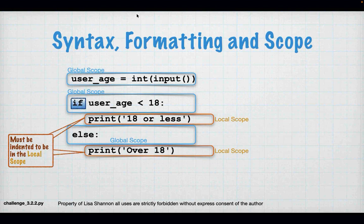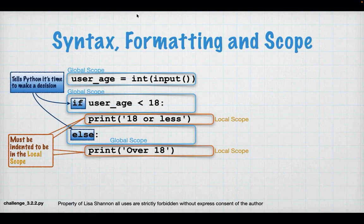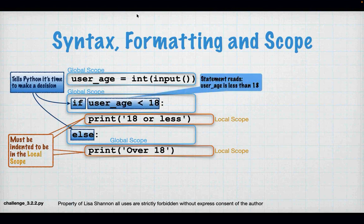If userAge is greater than 18, the local scope under the if statement is ignored because if evaluated to false. Then else executes what's in its local scope. If and else tell Python it is time to make a decision, and there is an order — if always has to come first. There is a relationship between if and else called mutual exclusivity.